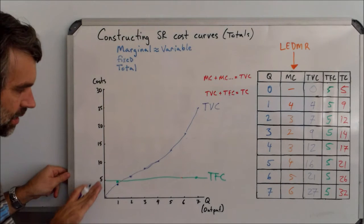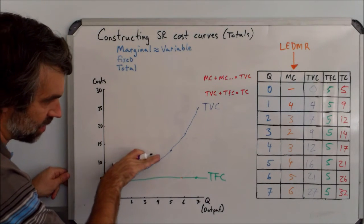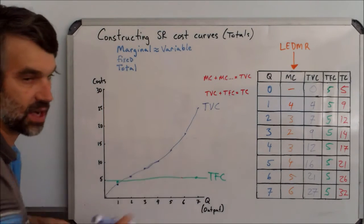And again, you see it gradually, it's less and less steep, and then becomes more steep as the production goes up and up and up.